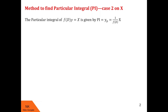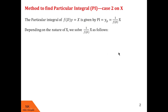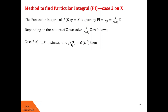We know that the particular integral of the linear differential equation f(d)·y = X is given by yp = 1/f(d) of X. Now we are taking this case where the right hand side X is of the type sine ax or cos ax. Since the left hand side is a function of d, it could have terms like d, d², d³, and so on, so we can assume f(d) as φ(d²) as it contains terms of d square.